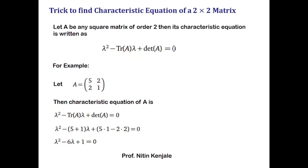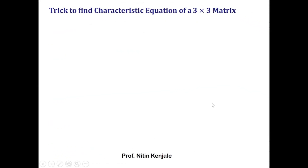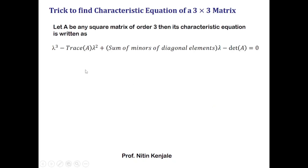On similar lines, let me show you the trick to find the characteristic equation of a 3×3 matrix. Let A be any 3×3 matrix. Then its characteristic equation is given by: lambda cubed minus trace of A times lambda squared plus the sum of minors of the diagonal elements of matrix A times lambda minus determinant of A equals zero.